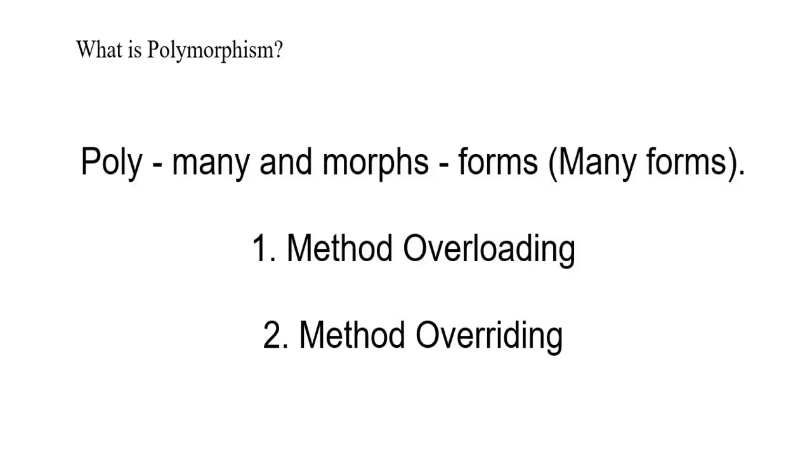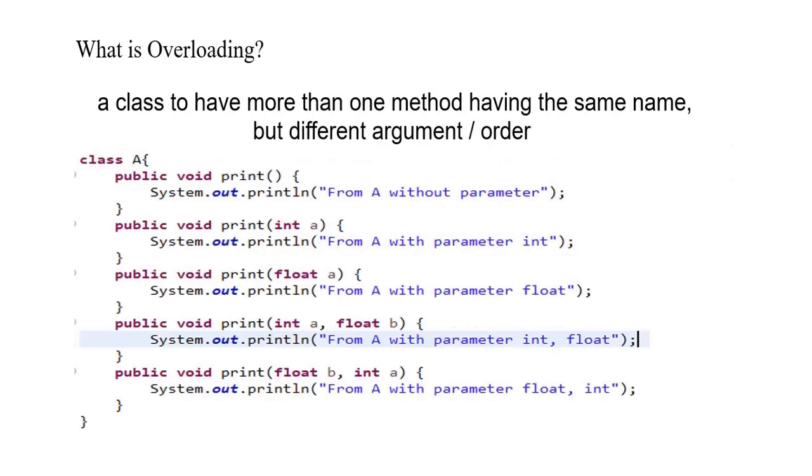I expect that you have understanding of what is polymorphism. Poly means many and morphs means forms. Polymorphism is basically method overloading and method overriding. I'm assuming you are aware of what polymorphism is.